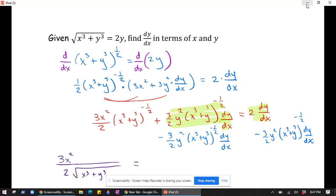Okay, and then on the other side of the equal sign, we've got these two terms. They both have a dy/dx in them, so I'm going to factor that out. So it's dy/dx, and what's left is 2 minus 3/2 y squared times x cubed plus y cubed to the negative 1/2.